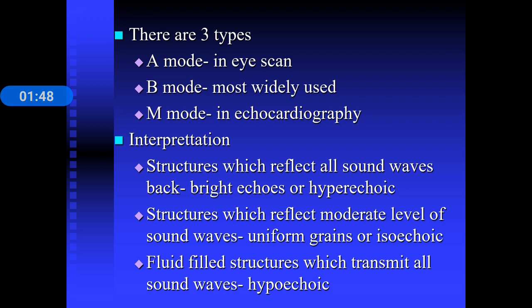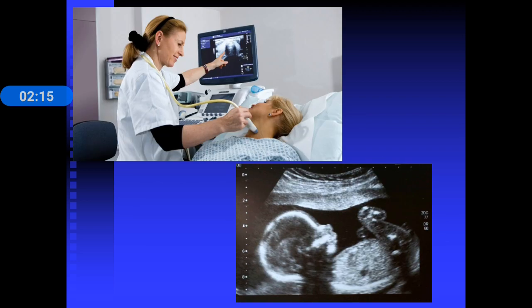Ultrasound images are classified into three types: hyperechoic, isoechoic, and hypoechoic. Hyperechoic structures reflect all sound waves back and appear bright. Isoechoic structures reflect a moderate level of sound waves and appear as uniform grains. Hypoechoic structures, like a urinary bladder filled with urine, transmit all the sound waves.